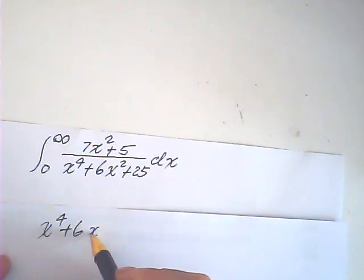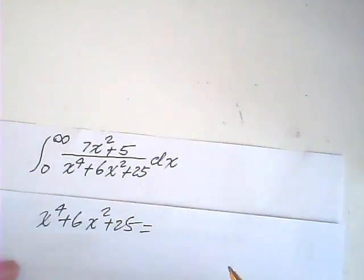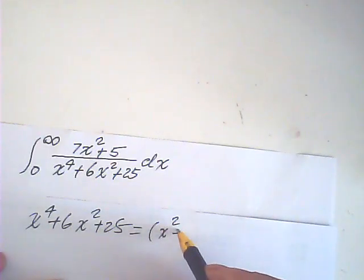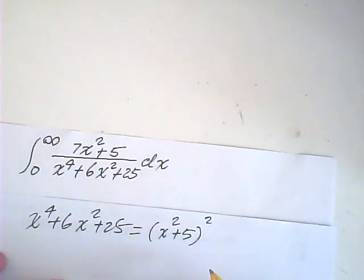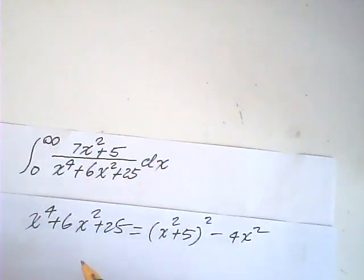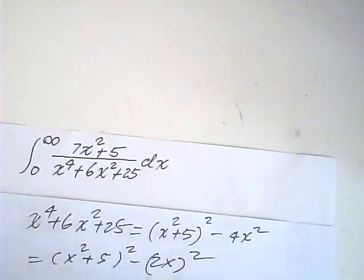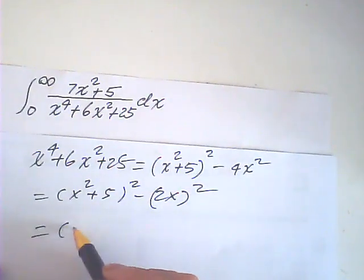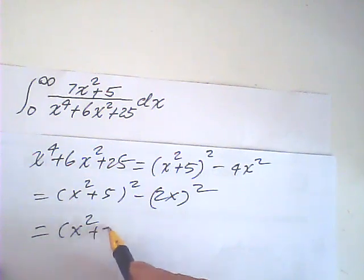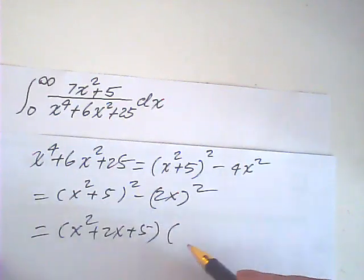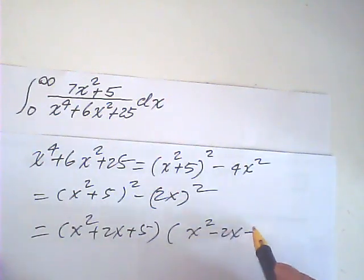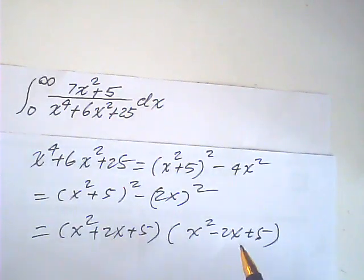This denominator could be written as x squared plus 5 squared, minus 4x squared. That's correct. So this one is equal to this, minus 2x squared. So it can be done with x squared plus 2x plus 5, and x squared minus 2x plus 5. So it can be factored.